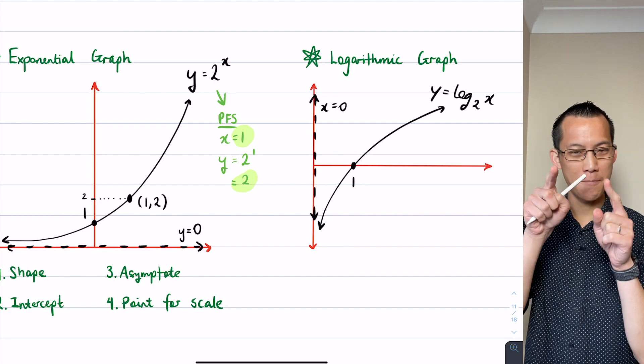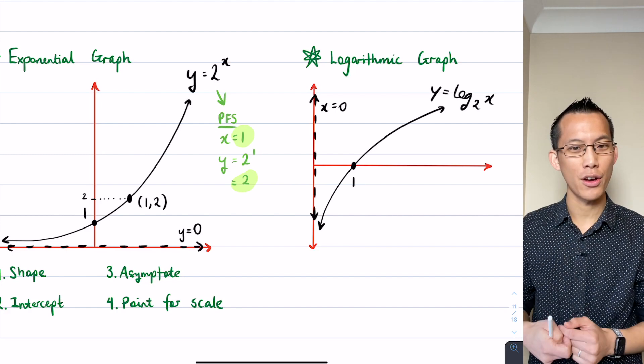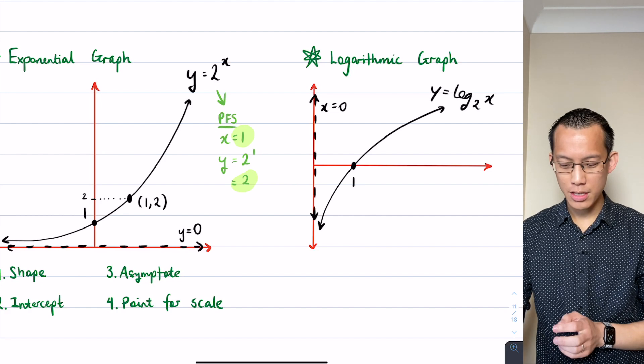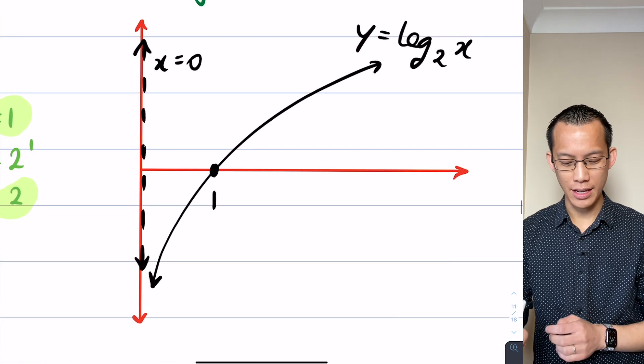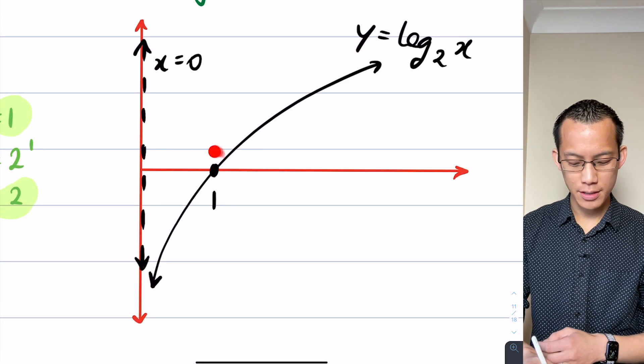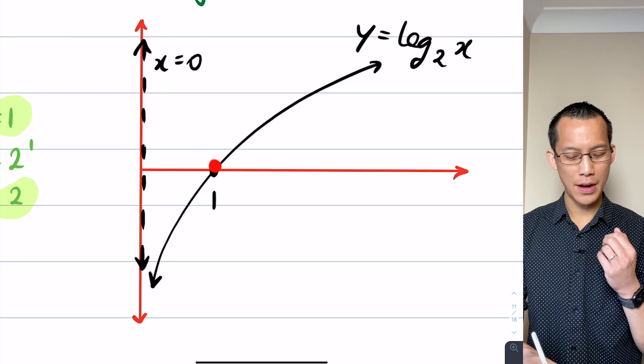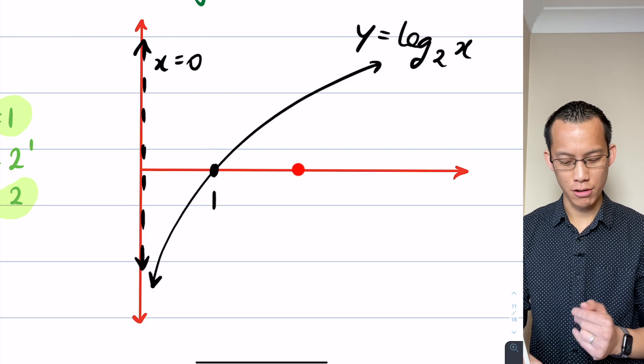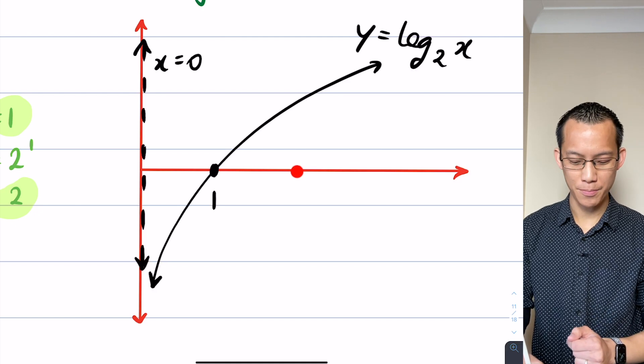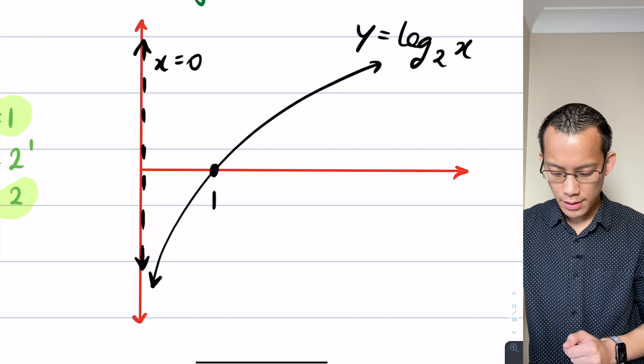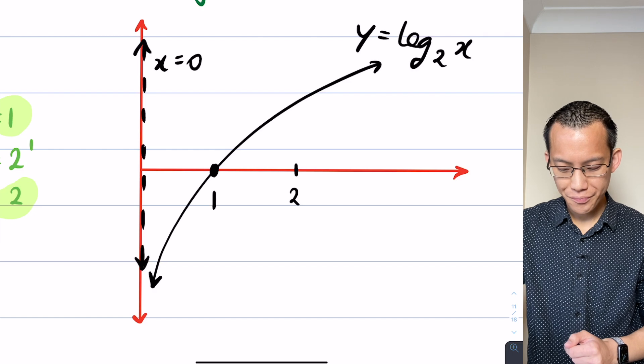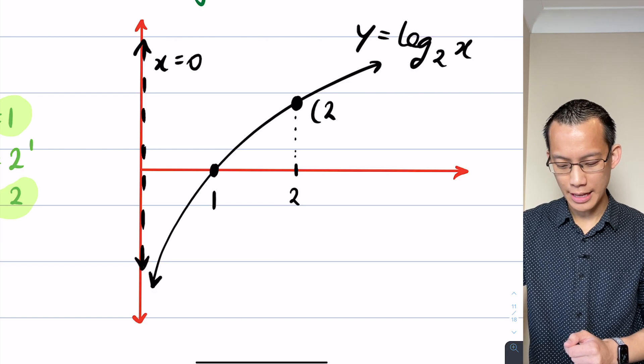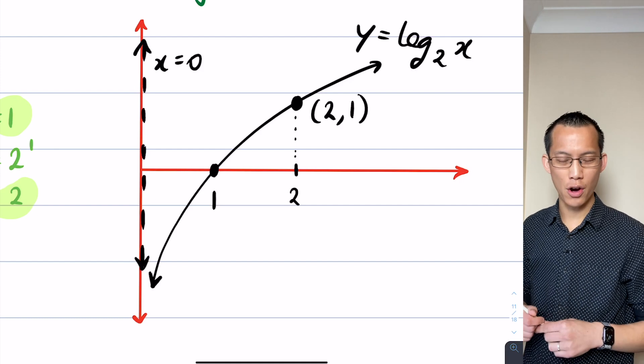If the previous point for scale was 1 comma 2, then here this graph is going to go through the switch around of the x's and the y's - it's going to go through 2 comma 1. I'm going to look at this horizontal scale. If I've positioned this as 1, then if I'm going to go over to x equals 2 it's going to have to be roughly double along otherwise my scale will be inaccurate. That's the spot I'm looking for. Let's mark that in as 2, go up to the curve, and here is my coordinates: 2 comma 1.